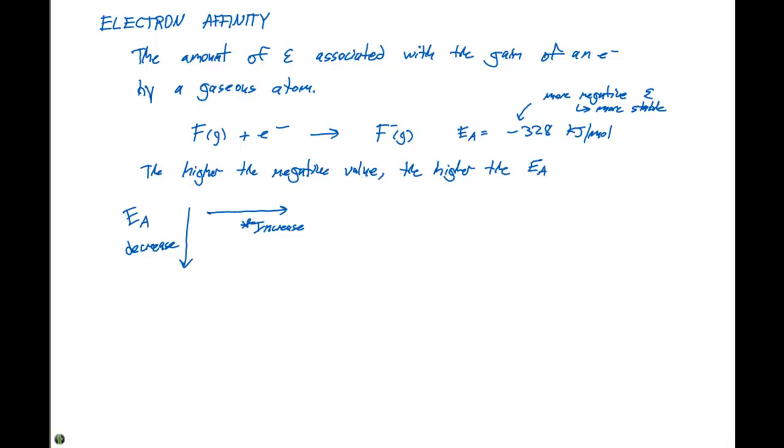We can analyze this trend for the elements in the second period of the periodic table. If we look at our electron affinity versus group number.